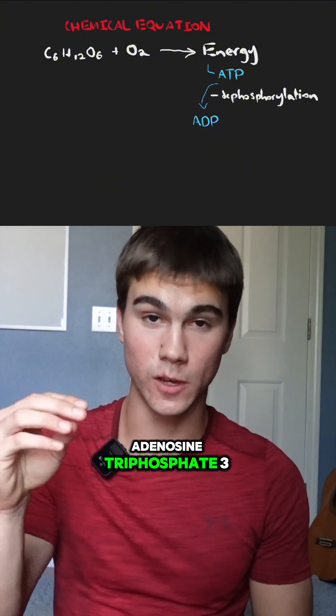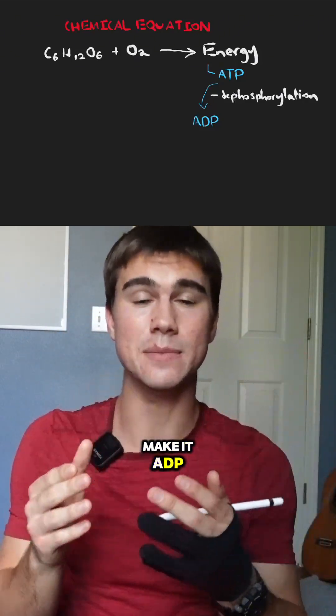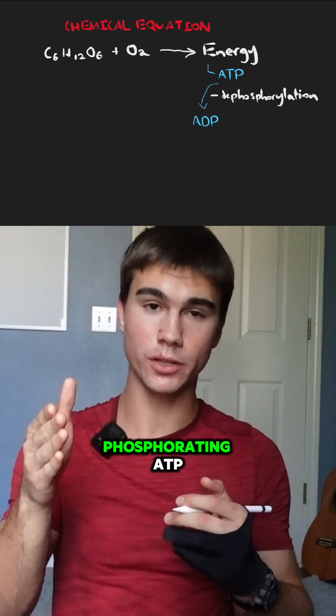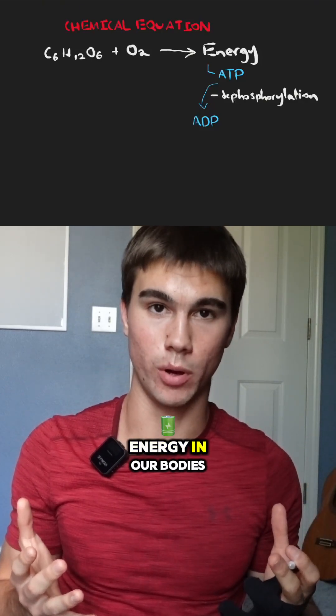Adenosine triphosphate has three phosphate groups. You remove a phosphate, make it ADP. The process of dephosphorylating ATP allows us to have energy in our bodies.